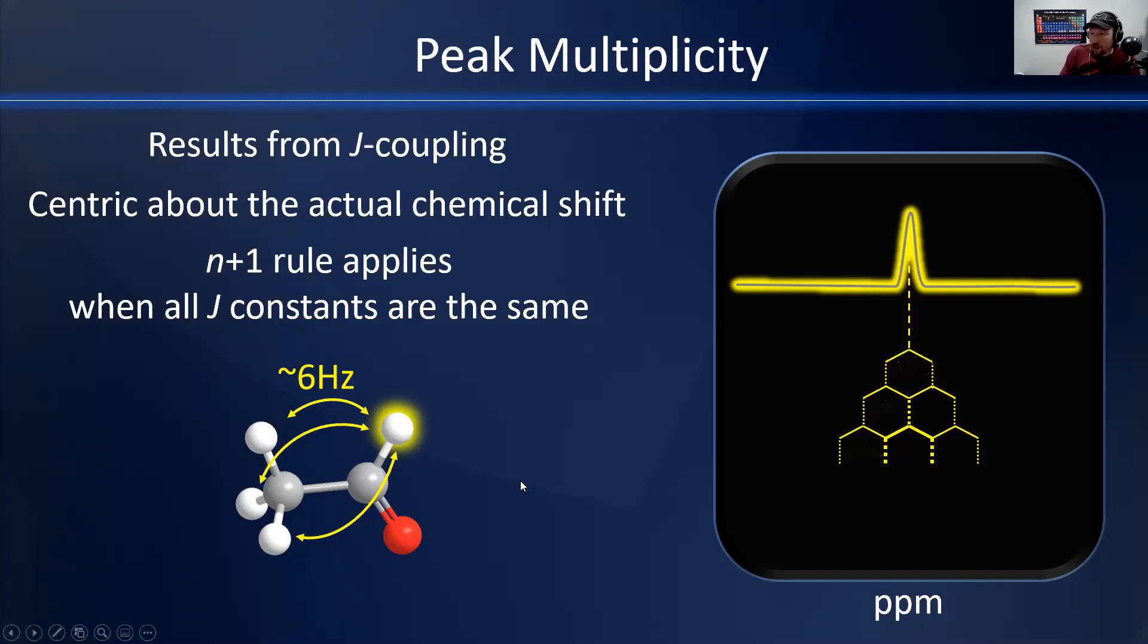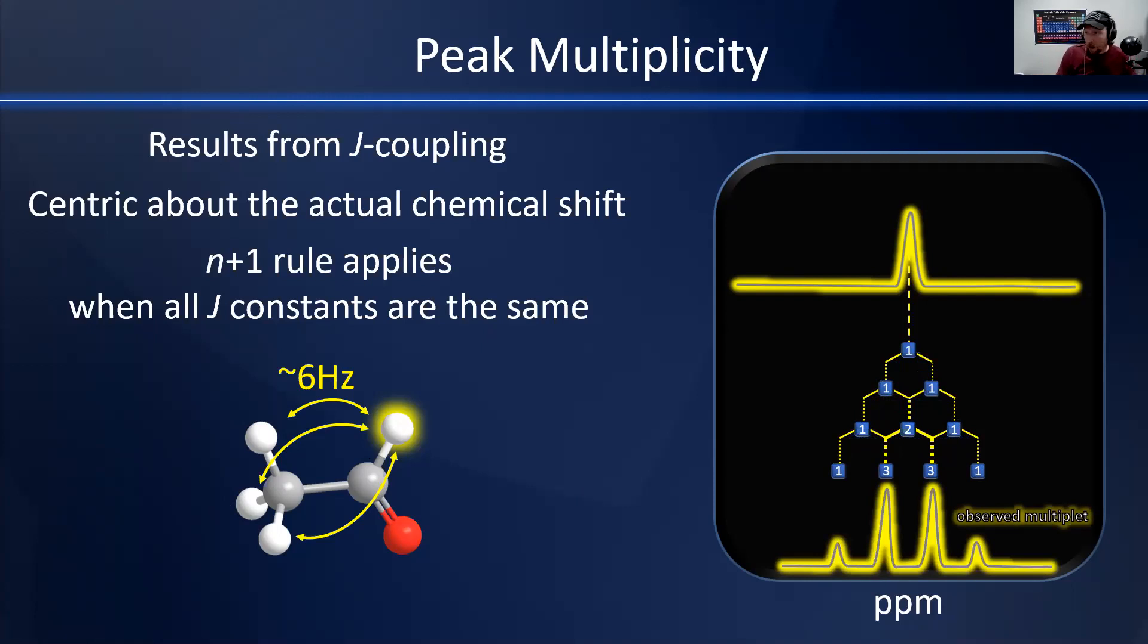We can use Pascal's triangle to predict the relative intensity of the lobes of the multiplet. We predicted a 1:3:3:1 quartet, just a classic multiplet for a proton that has three equivalent coupling partners.